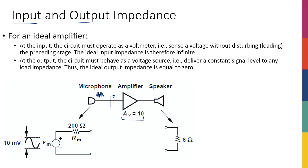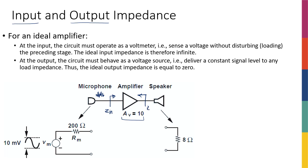In this course, input impedance and input resistance mean the same thing because we only deal with resistors. I'll use the term input impedance as the more generic term. Generally, it means: if I look into the amplifier from the input node, what equivalent resistance do I see for the rest of the circuit? Similarly, output impedance is defined by looking from the output — what kind of resistance or impedance do I see from there?